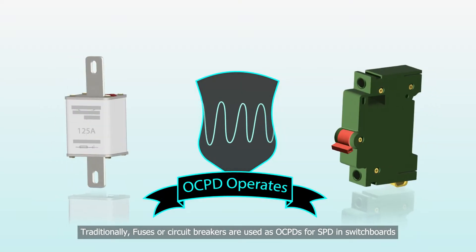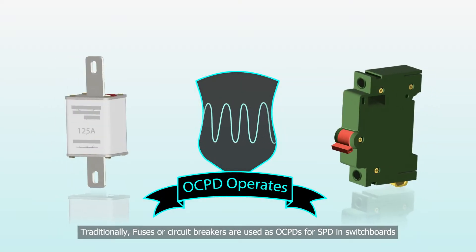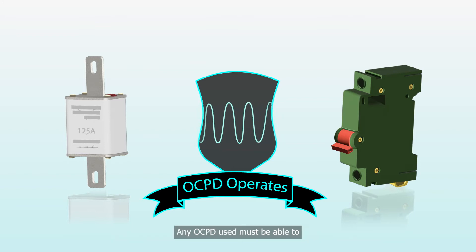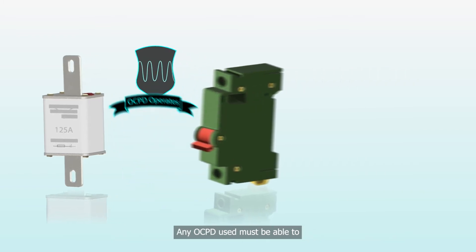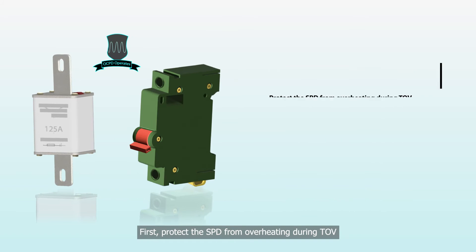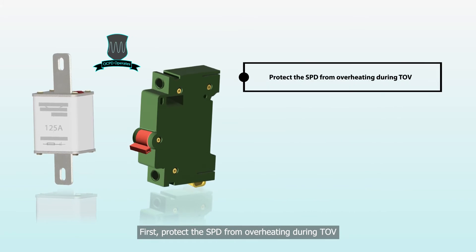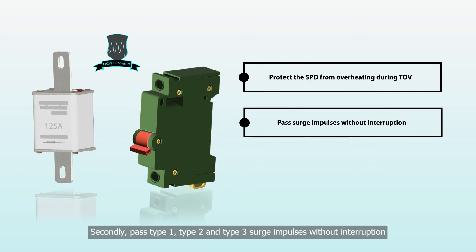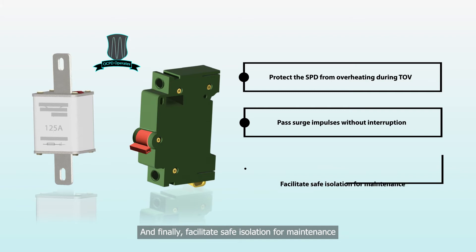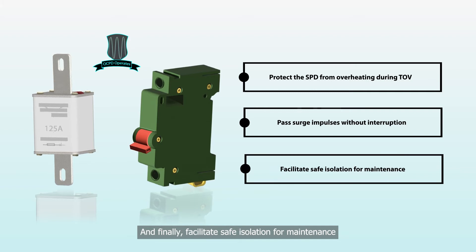Traditionally, fuses or circuit breakers are used as OCPDs for SPDs in switchboards. Any OCPD used must be able to: first, protect the SPD from overheating during TOV; secondly, pass Type 1, Type 2, and Type 3 surge impulses without interruption; and finally, facilitate safe isolation for maintenance.